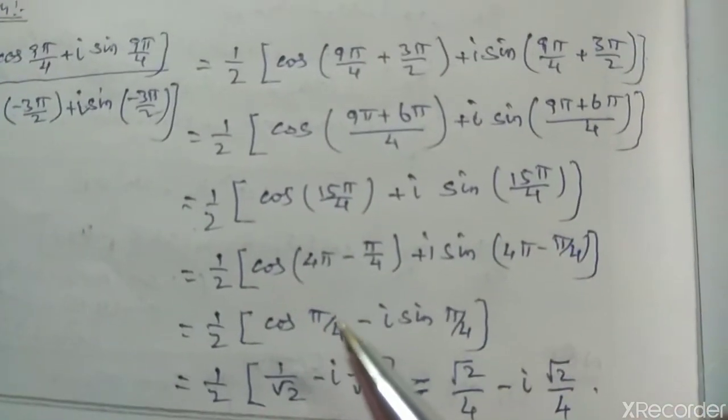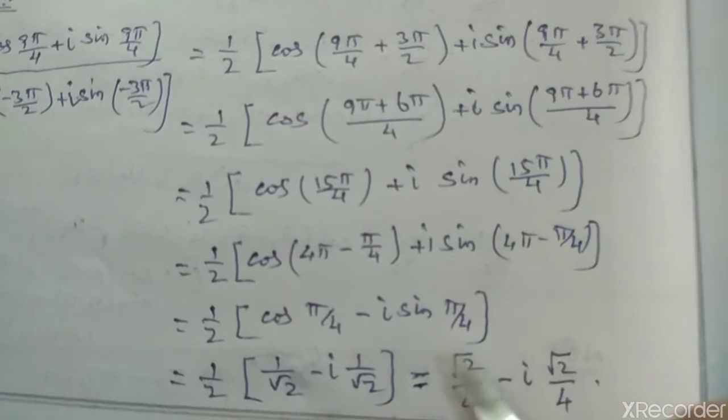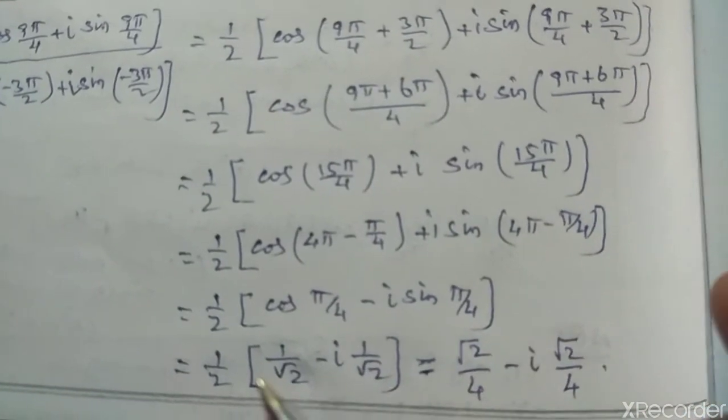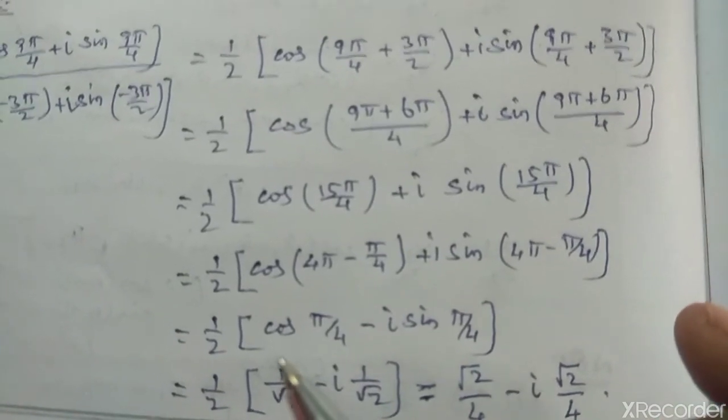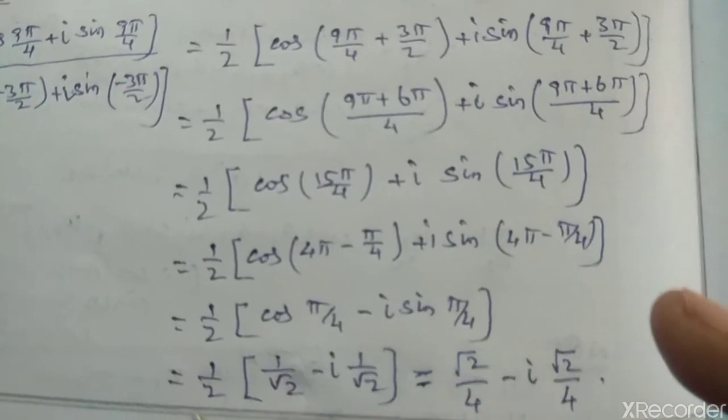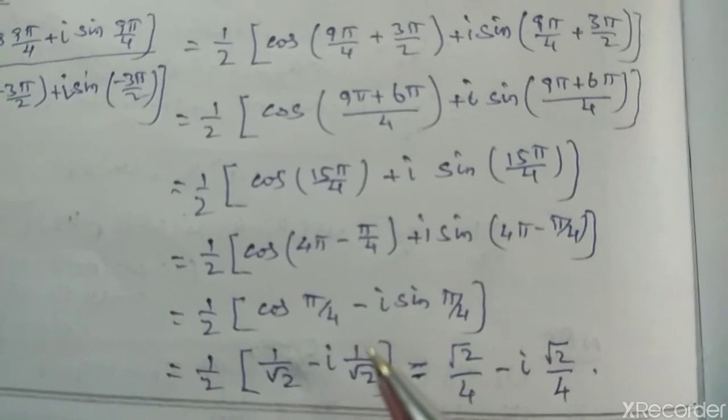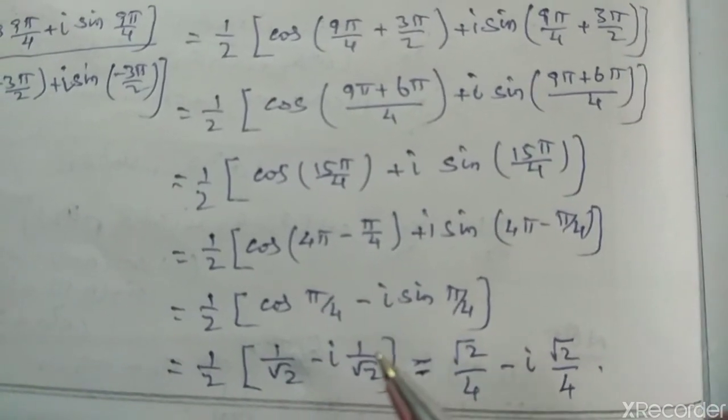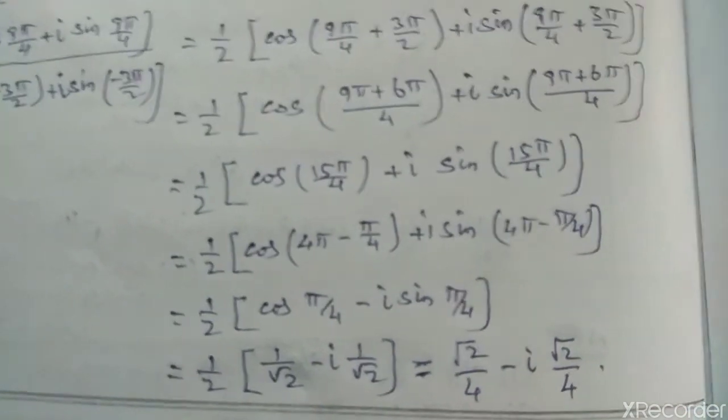Since cos(π/4) is 1/√2 and sin(π/4) is 1/√2, we get 1/2 times (1/√2 - i/√2). Multiplying by √2/√2, this becomes √2/4 - i√2/4, which is our final answer in rectangular form.